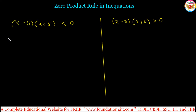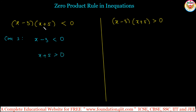In case 1, for the product less than 0, if we take x minus 3 less than 0 then x plus 5 must be greater than 0, because the product is negative — one should be less, one should be greater. From x minus 3 less than 0, x is less than 3. From x plus 5 greater than 0, x is greater than minus 5.